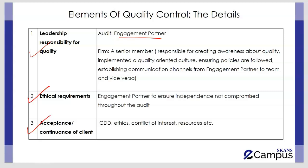Acceptance or continuance of a client is the third element. ISQC 1 sets out what a firm must consider and document in relation to accepting or continuing an audit engagement or any other engagement. Examples of factors include: integrity of the client, whether the firm is competent to do the work, whether ethical requirements are met, whether customer due diligence and know-your-client procedures have been covered, any conflict of interest with existing clients, and whether relevant resources and staff time are available. These will be covered in a separate video as well.